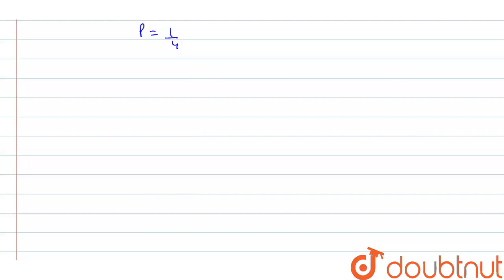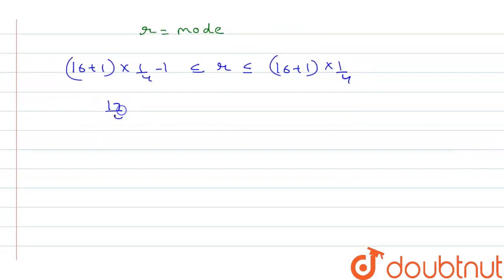Now basically in binomial distribution we know the relationship that (n+1)p - 1 is less than equal to r is less than equal to (n+1)p where r is less than equal to 16 plus 1 multiply 1 by 4. So from here we can say that 17 by 4 minus 1 is less than equal to r is less than equal to 17 multiply 1 by 4.